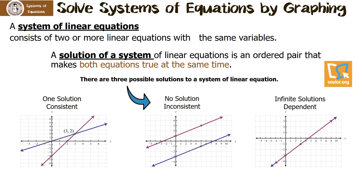We could also have no solution — that means they're inconsistent. When we look at this graph, we notice that they're parallel; they never intersect, that's why there's no solution. Finally, we have infinite solutions — those are dependent lines. When we look at the picture, you're going to see that the two lines are exactly the same. Let's get graphing.